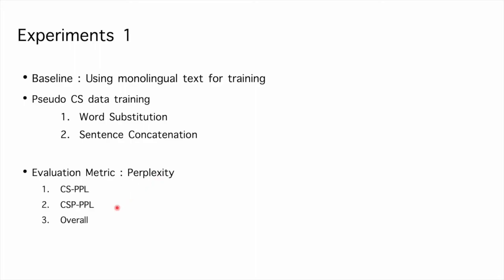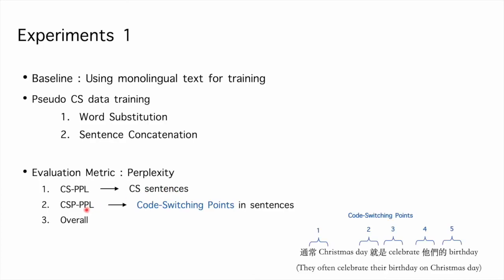And we show three kinds of perplexity. The first, CS-PPL is the perplexity on code-switching sentences. The second is CSP-PPL, which stands for perplexity on code-switching point. Code-switching points occur when language of next word is different from current word.